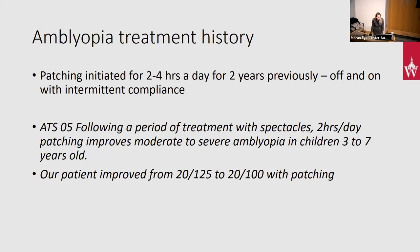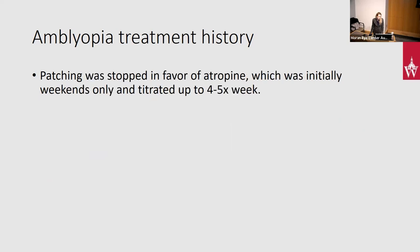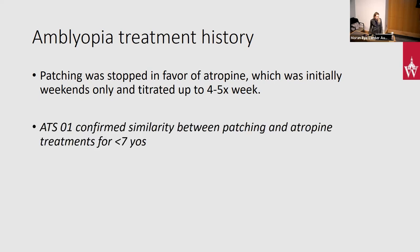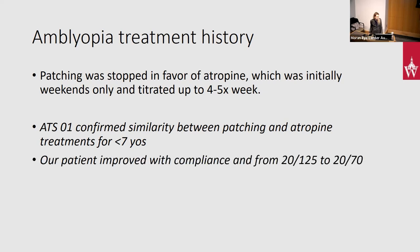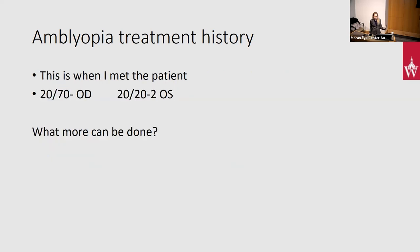Personally, I like the staggered approach because when the child improves their visual acuity, patching is met with a little less resistance — probably because they're seeing better out of their amblyopic eye, so you get some buy-in. The fun thing about ATS-22 is we're doing parent and child surveys, so we'll learn whether that's actually evidence-based — maybe kids prefer a shorter overall treatment time. This kiddo patched off and on without great compliance, so we stopped patching and moved on to atropine therapy, initially weekends only, then titrated up to four to five times a week. ATS-1 confirmed that patching and atropine are pretty equivalent for treating amblyopia in kids under seven, and our kid really did better with atropine. His compliance improved and he went from 20/125 to 20/70.